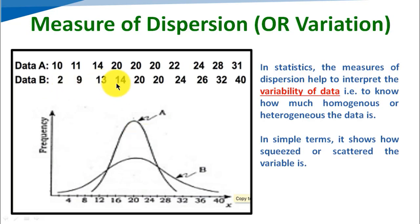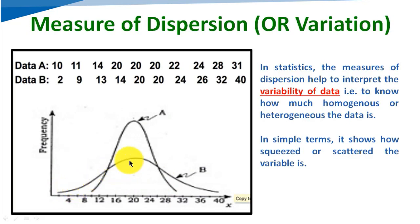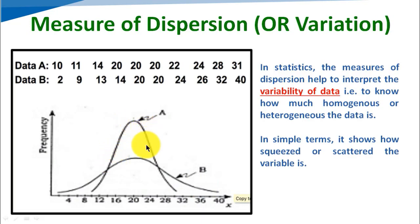Data B is: 2, 9, 13, 14, 20, 20, 24, 26, 32, and 14. Graph B is for data B. This is what data B looks like, and this is how the data has been spread on the figure.